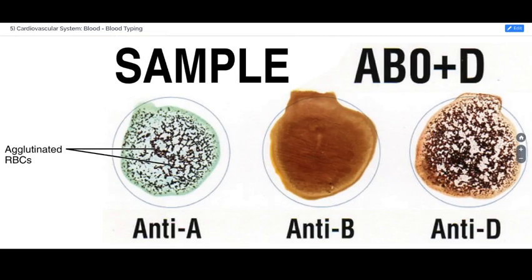To determine blood type, a test is run by exposing the blood to antibodies against the various antigens. What we see here is an image representing three drops of blood on a microscope slide, and each drop of blood is exposed to a different antibody. When there's a reaction, we see clumping of the red blood cells, or agglutination. Here we see a reaction with the antibody against the A antigen but no reaction with the antibody against the B antigen, meaning this is type A blood, and then a reaction to the antibody against the Rh factor — here called the anti-D antibody. So this would be A positive blood.